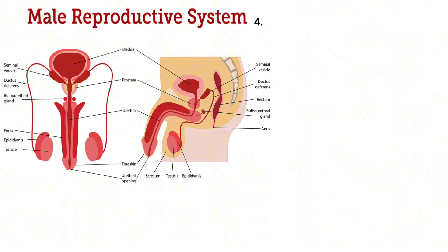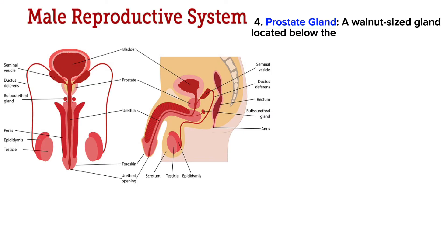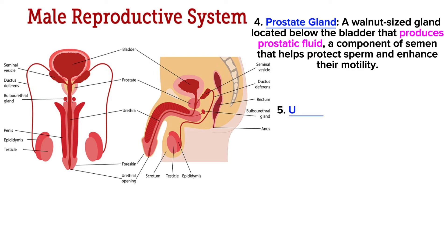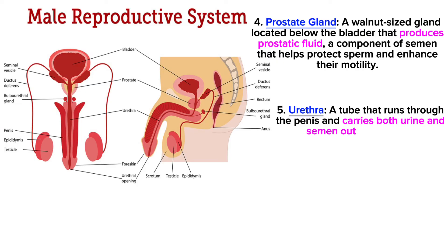Next we move to the prostate gland — a walnut-sized gland located below the bladder that produces prostatic fluid, a component of semen that helps protect sperm and enhance their motility.